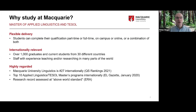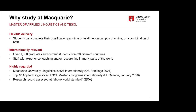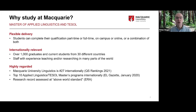There are many degrees in Applied Linguistics and TESOL at the master's level in Australia and around the world. What makes Macquarie's programs unique? One is flexible delivery — students can study part-time or full-time, on-campus or online, or a mixture of both. For international students on a student visa there are some restrictions on part-time study, but domestic students can study part-time and balance studies with family or career commitments. People who choose to study online sometimes live in other parts of the world and never set foot on the Macquarie campus — there is no on-campus requirement.